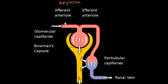Drug comes in at the afferent arteriole, which splits into these glomerular capillaries enveloped in Bowman's capsule. At the basement membrane, there are slit pores which allow drugs of a certain size to get through and be filtered. Drug that is not filtered will leave via the efferent arteriole, which branches into another capillary plexus called the peritubular capillaries.